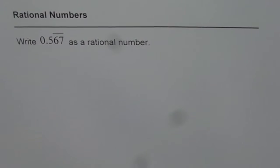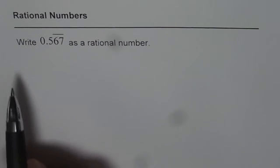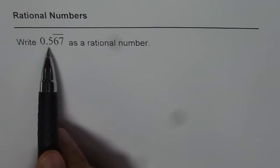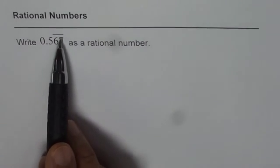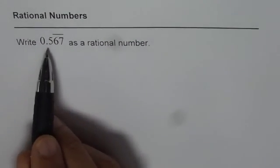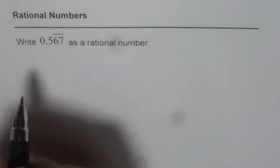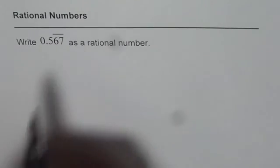I'm Anil Kumar and here is another example of writing repeated decimal numbers as rational numbers. The question is, write 0.567 recurring as a rational number. When I say 0.567 with a bar on top, it really means that the number 67 repeats.